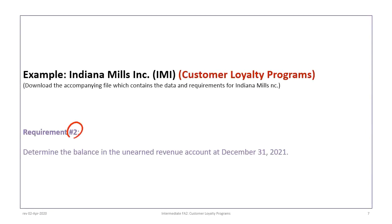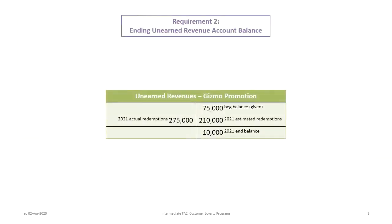We will now proceed with requirement 2: to determine the balance in the unearned revenue account at December 31, 2021. The beginning balance in the promotion account is $75,000. When the company sold boxes of cereal, the estimated redemptions of $210,000 were credited to the account. Then actual redemptions of $275,000 were debited out, leaving an ending balance of $10,000 to be carried forward if the promotion continues. If the promotion ends and no more gizmos can be redeemed, this $10,000 would have to be removed and reversed.